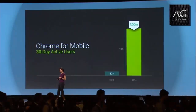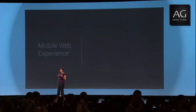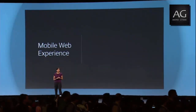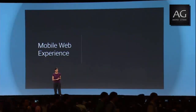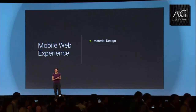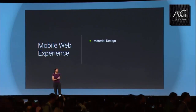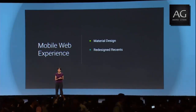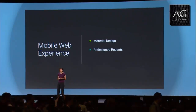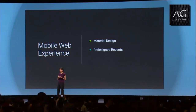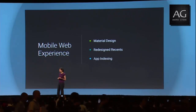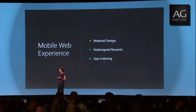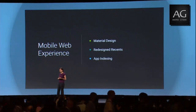Today I'm going to talk about three ways we're going to do that. We're enabling material design experiences on the mobile web. We're redesigning Recents to help you multitask. And we're extending our capabilities of app indexing to help people get to where they want to go faster.